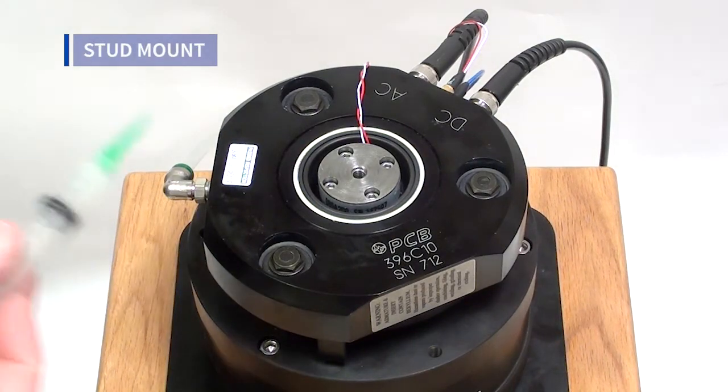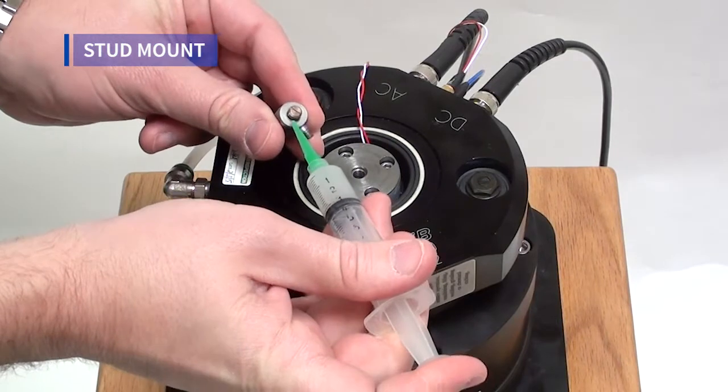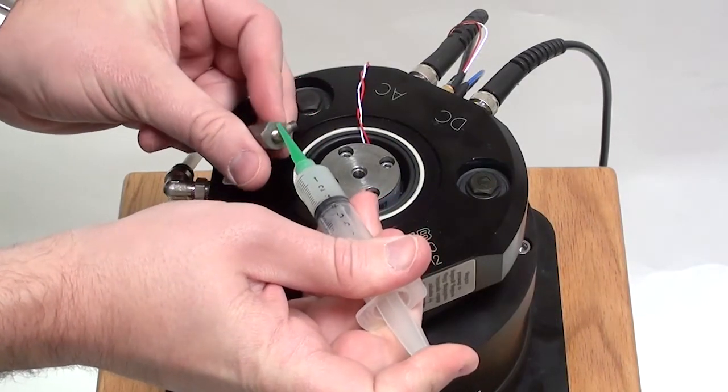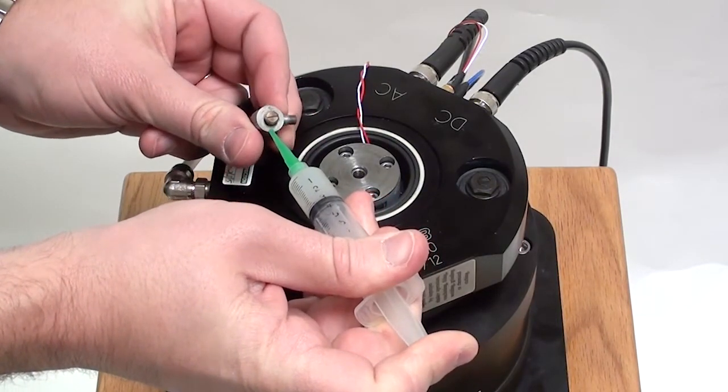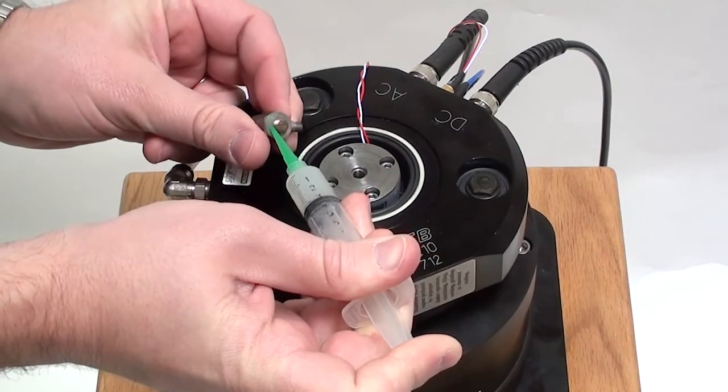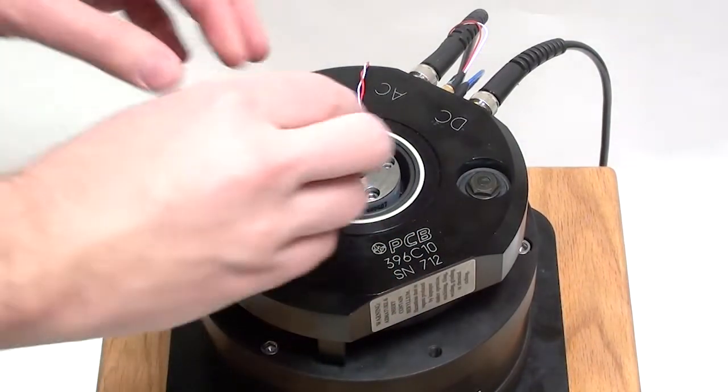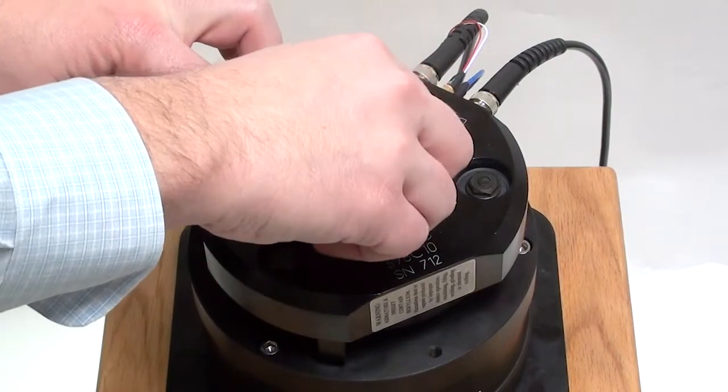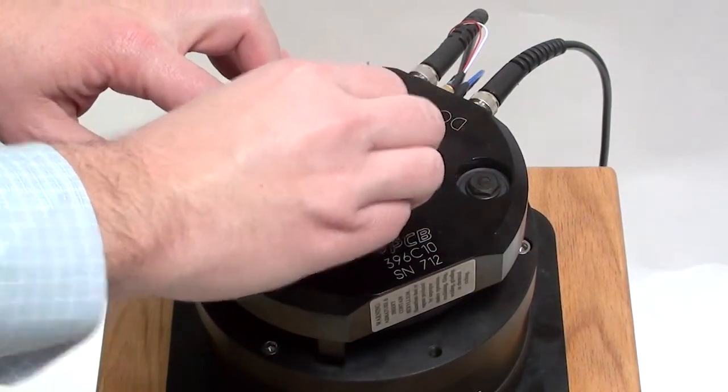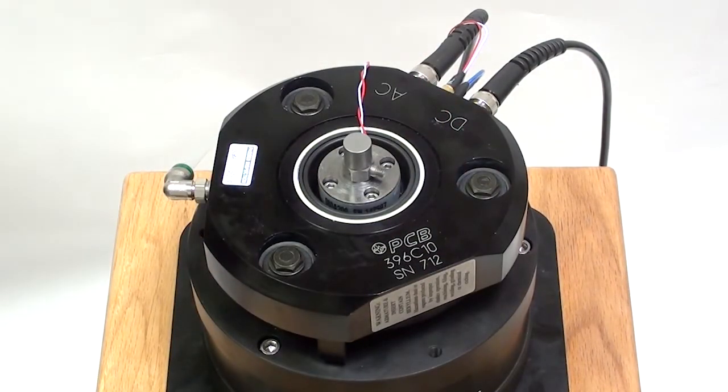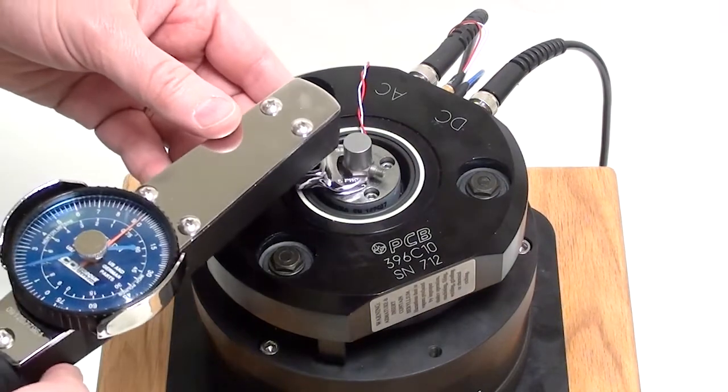For stud mounting, apply a small amount of gap-filling silicon grease to the mounting surfaces. Then, thread the accelerometer to the mounting hole with the mounting stud and apply the appropriate torque.